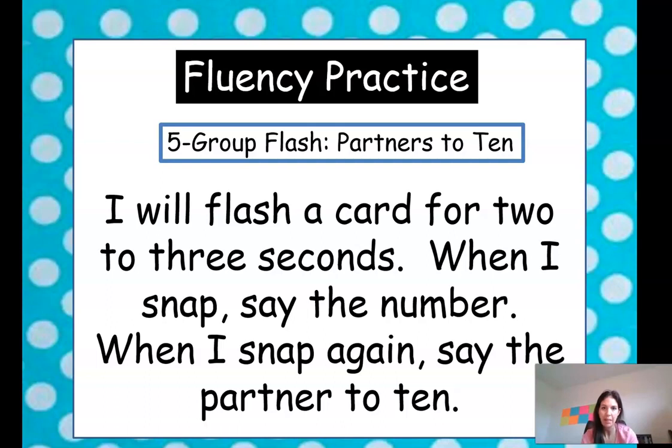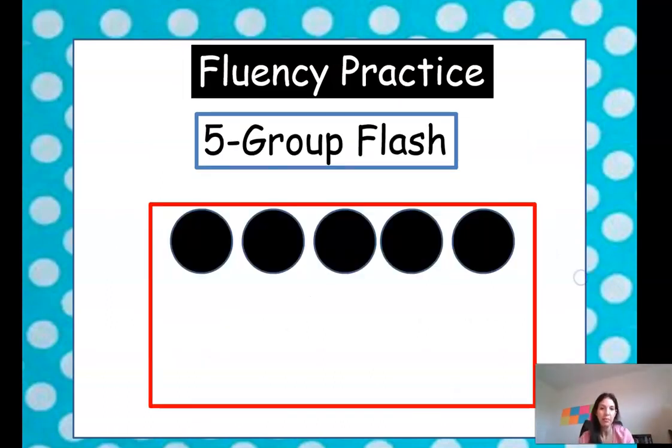But first, I'm going to flash a card for 2 to 3 seconds and then when I snap my fingers, you're going to say the number and when I clap my hands, you're going to say the partner to 10. So if you saw 5 dots, the partner to 10 would be 5. What plus that number equals 10 is what you're thinking about.